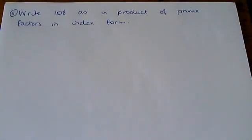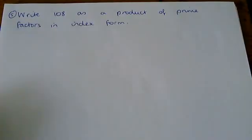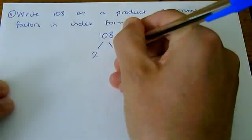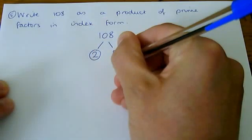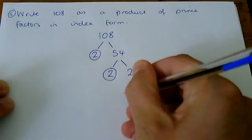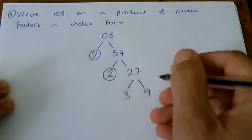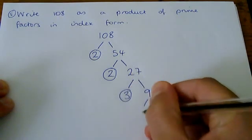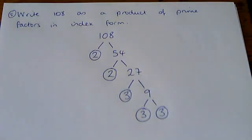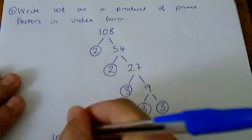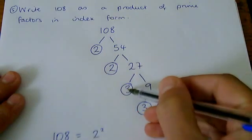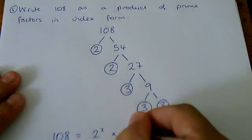And one last example, just trying to get home this idea about index form. 108 is 2 times 54, which is 2 times 27. 27 is 3 times 9, and 9 is 3 times 3. So what we end up with is 108 can be written as 2 times 2, that's 2 squared, and 3 times 3 times 3 is 3 cubed. That would be your answer.